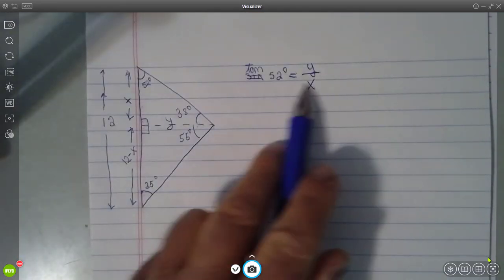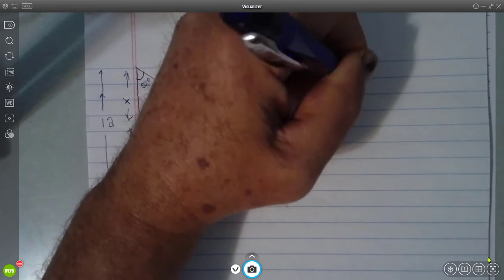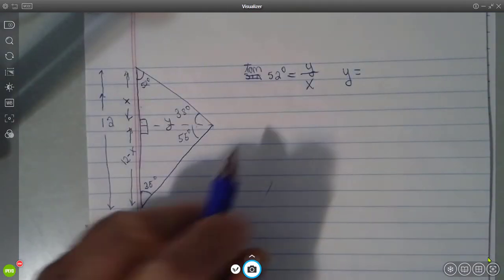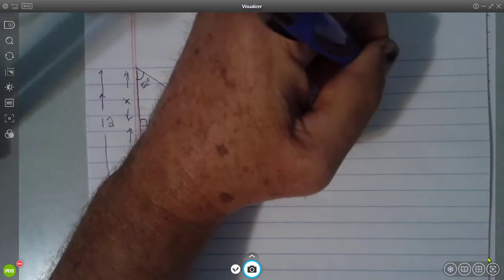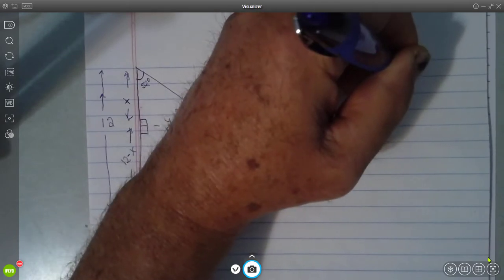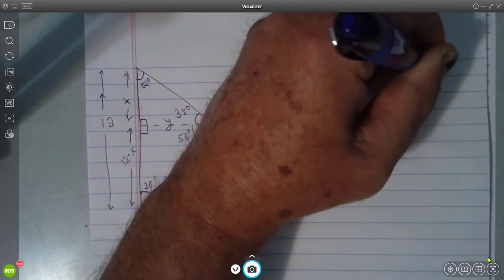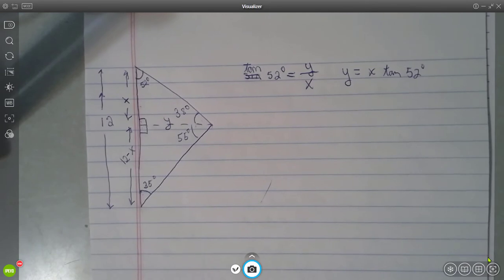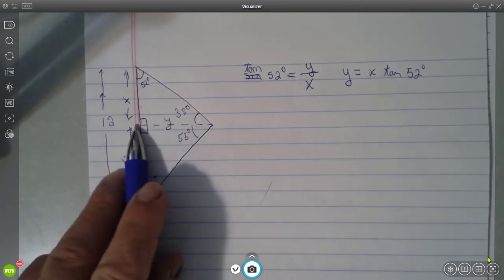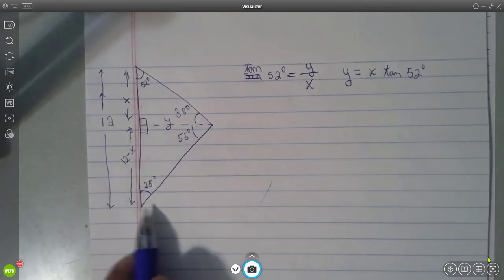And I can solve this for y. y is equal to x times the tangent of 52 degrees. Now in the same way I could work on y from this triangle, so let's do that.